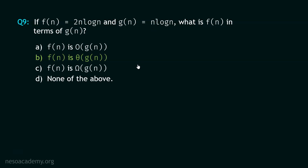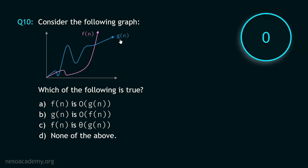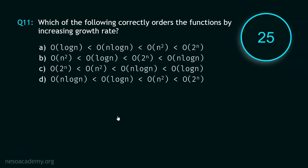Now let's move to question number 10. Your time starts now. Stop. In this graph, you can observe that f(n) is asymptotically bigger than g(n). Therefore g(n) is O(f(n)), and hence option B is the correct option.